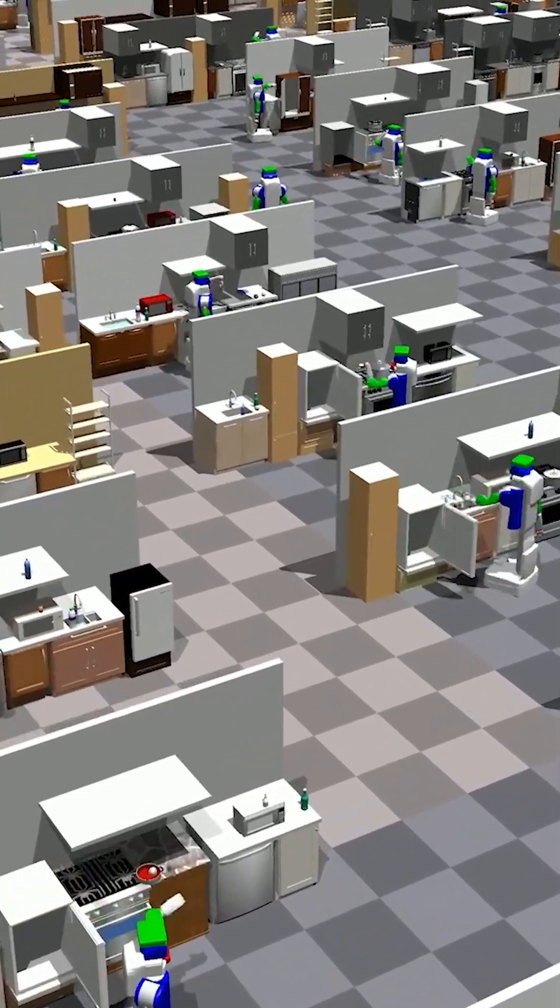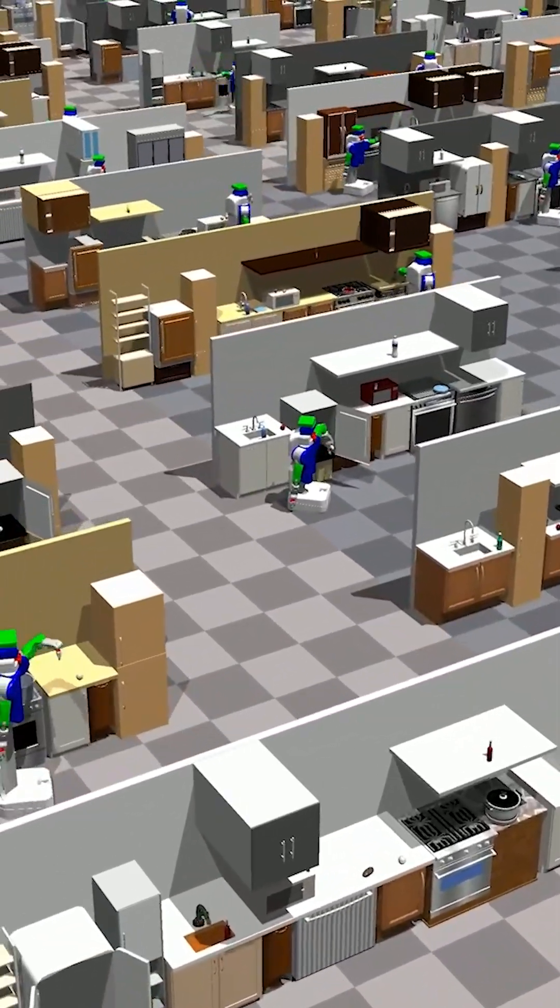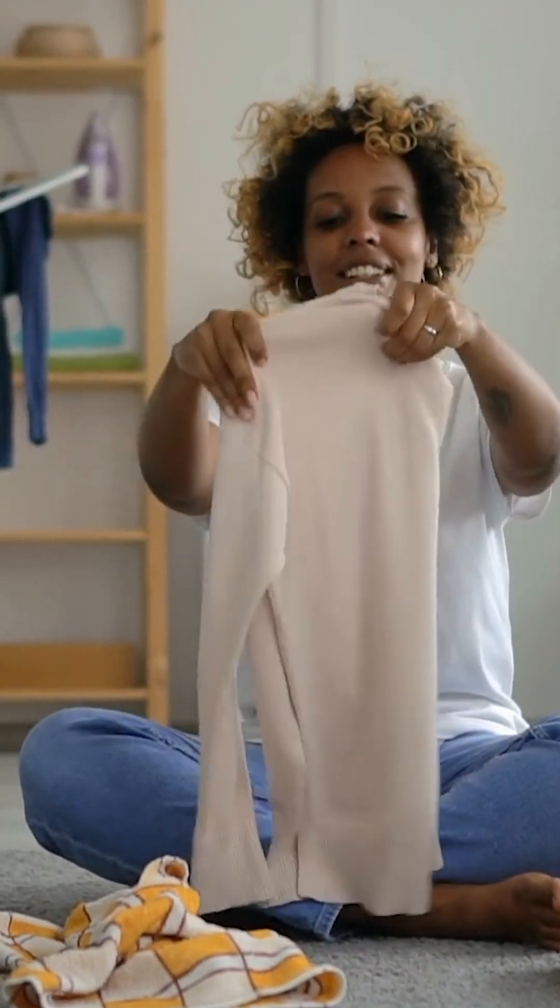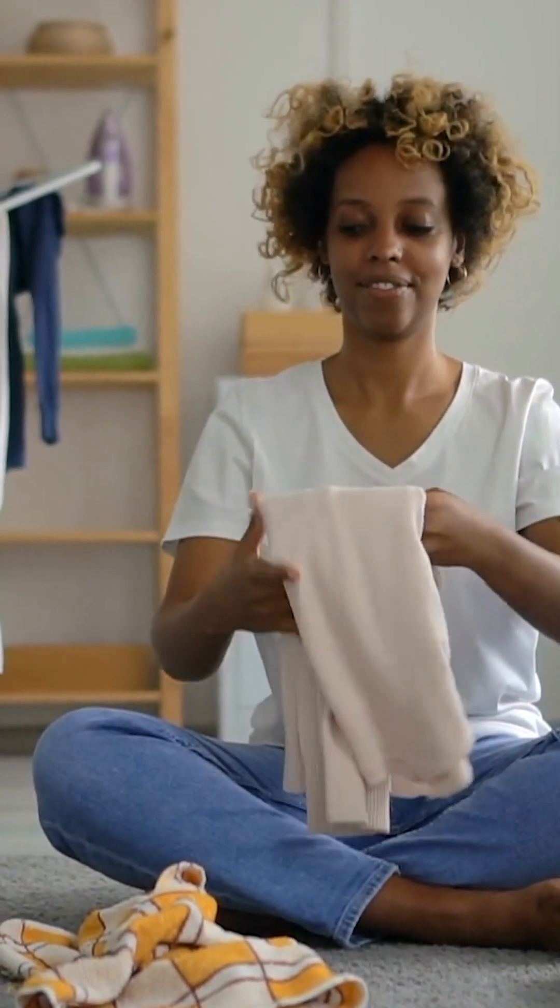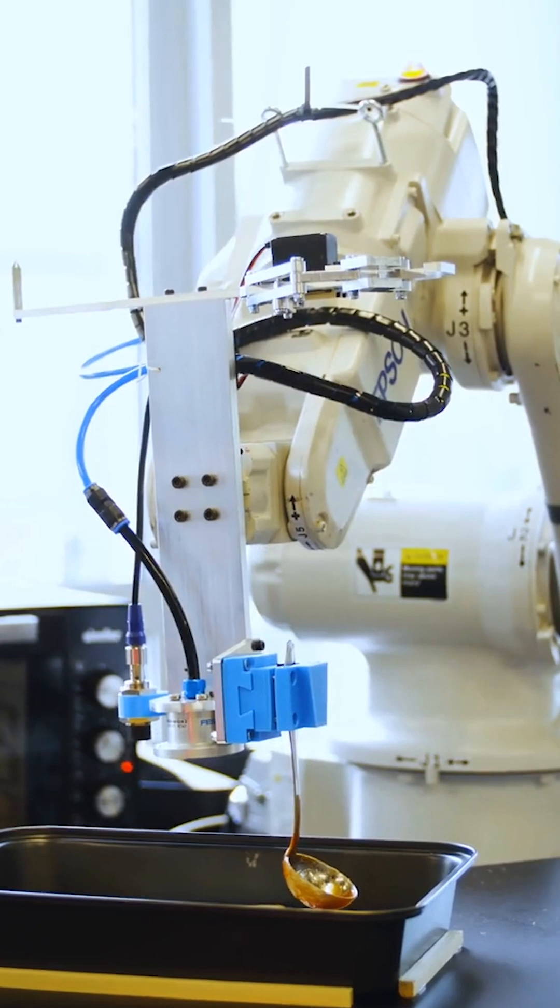So what could these systems do for us? They could do personalized assistance. They could support us with daily tasks, maybe household chores like folding laundry or cleaning or cooking.